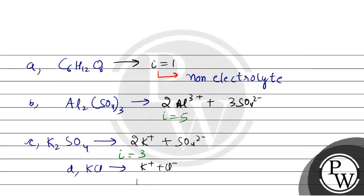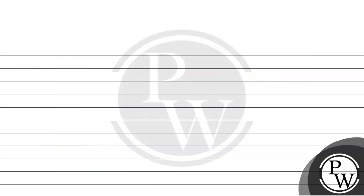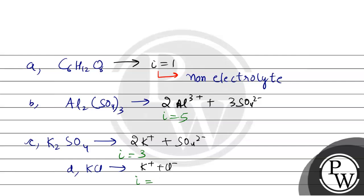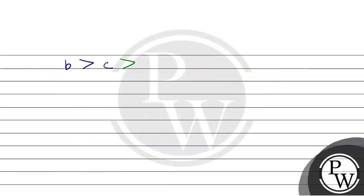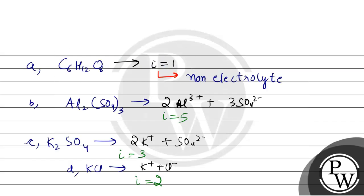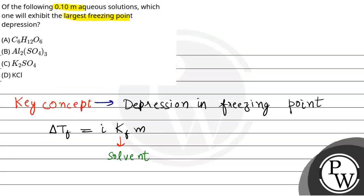Now we can see that the largest value of i is 5, which belongs to Al₂(SO₄)₃. The overall order of depression in freezing point is: B > C > D > A. The maximum depression in freezing point belongs to option B, which is aluminium sulfate. So the final answer is option B. Hope you understood it well — best of luck!